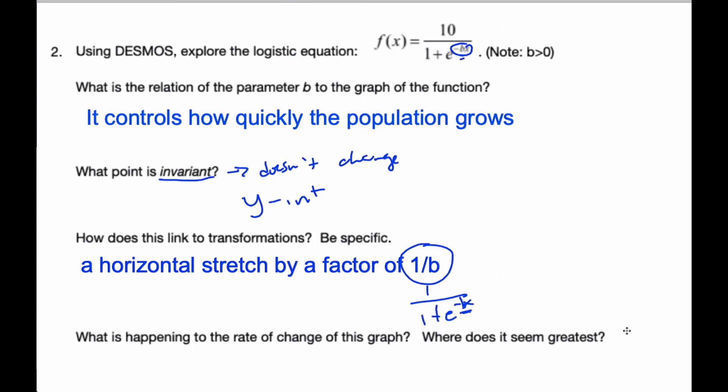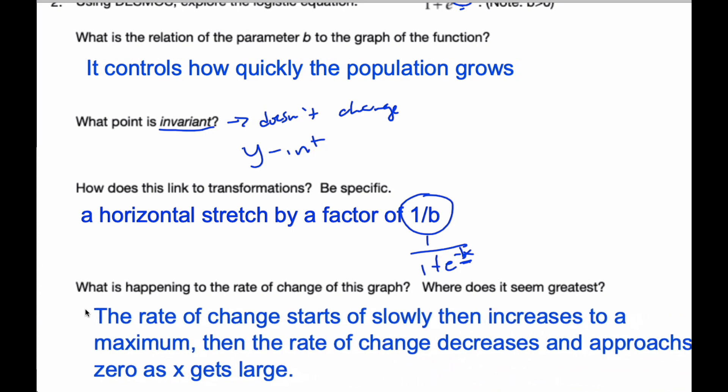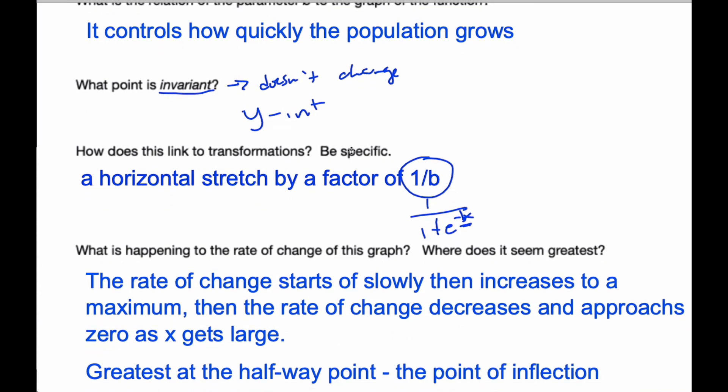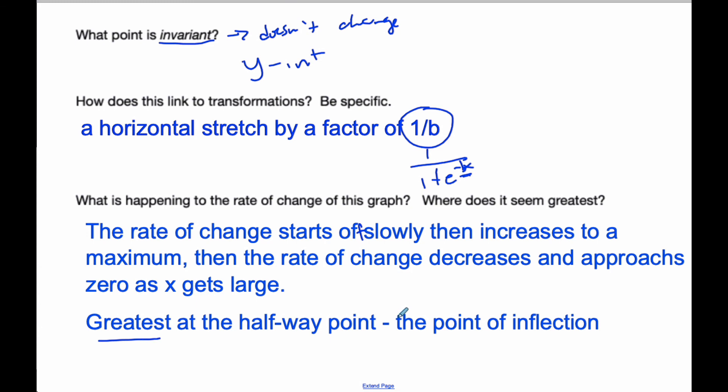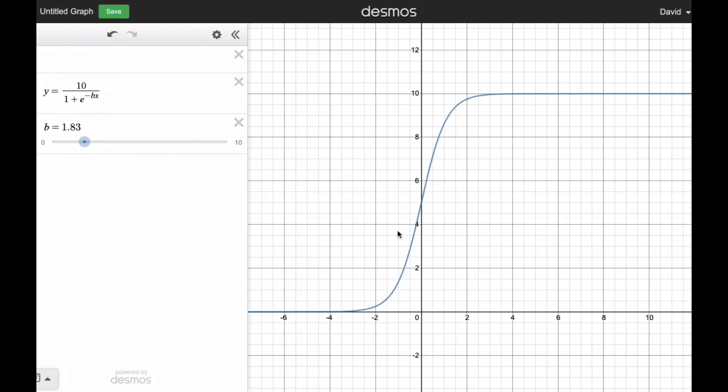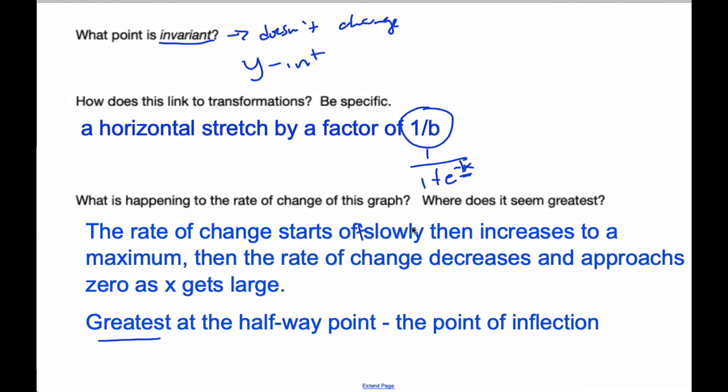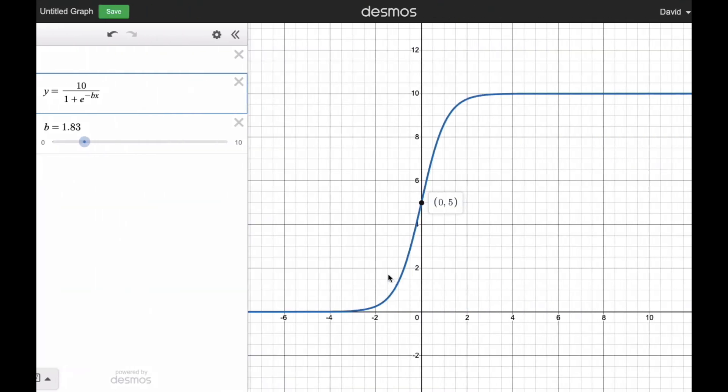So what has happened to the rate of change? Well, the rate of change starts off slowly, then increases to a maximum, then the rate of change decreases and approaches zero as x gets large. It is greatest at the halfway point, which is the point of inflection. So at this point here, 0, 5 in this case, that is where the slope of the tangent line is steepest. That is where the rate of change is the most. And this is called a point of inflection because this graph is kind of curving upwards, and this graph is kind of curving as a downward curve, even though it's increasing.